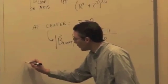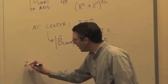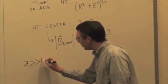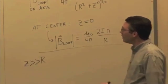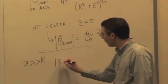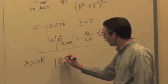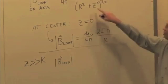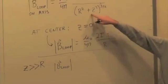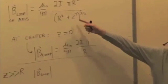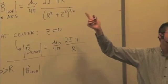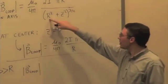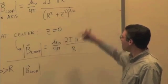What's more interesting, though, is for cases when the distance z is much bigger than the radius of the loop. So, if r squared plus z squared, if z is much bigger, this is going to approximately be equal to just z squared, right? Add something small to something big, I just get something big.